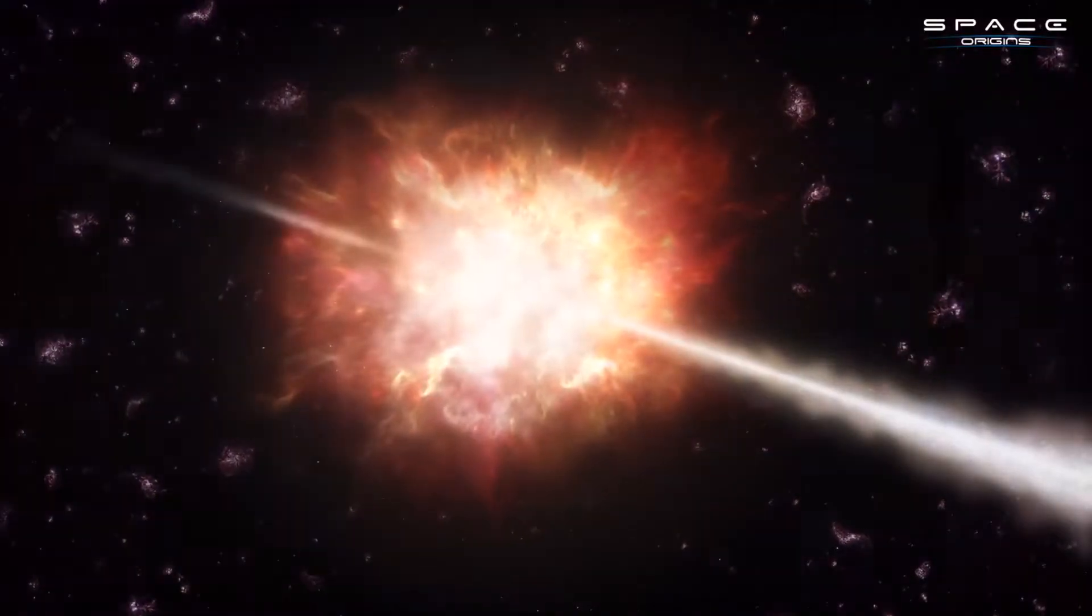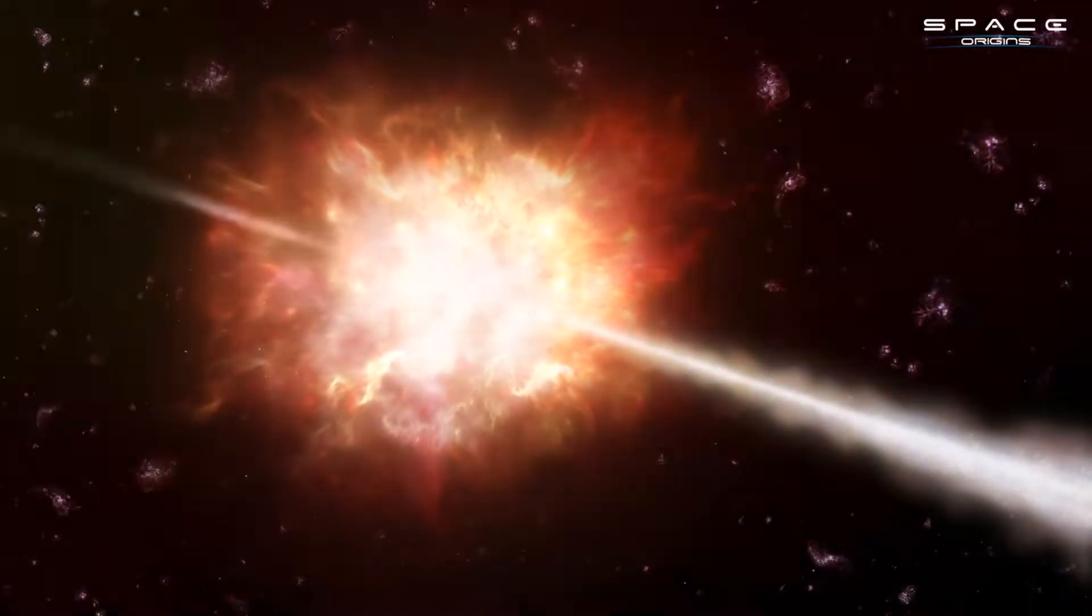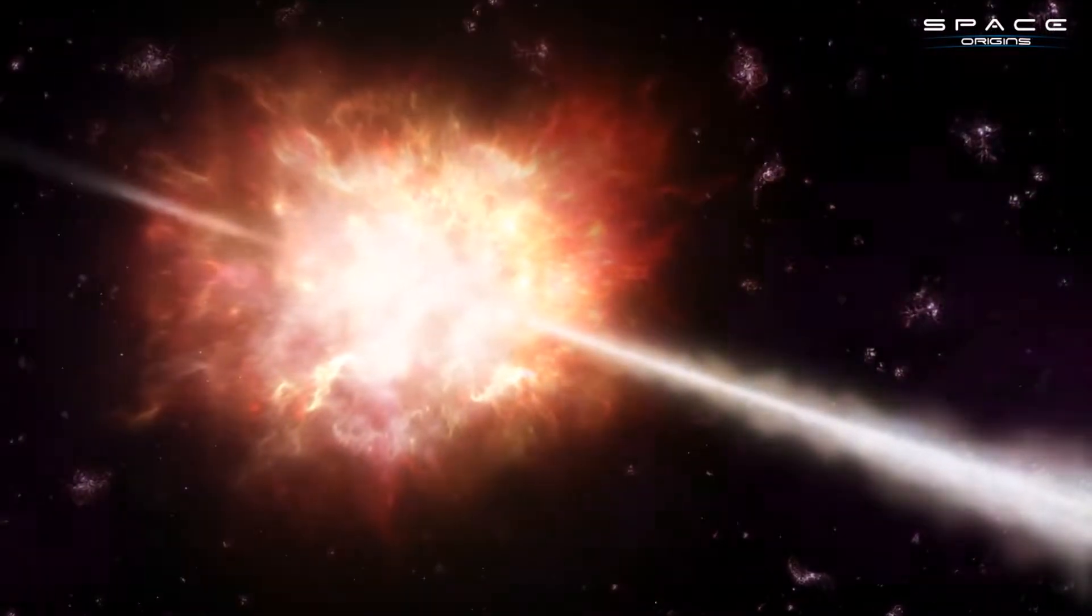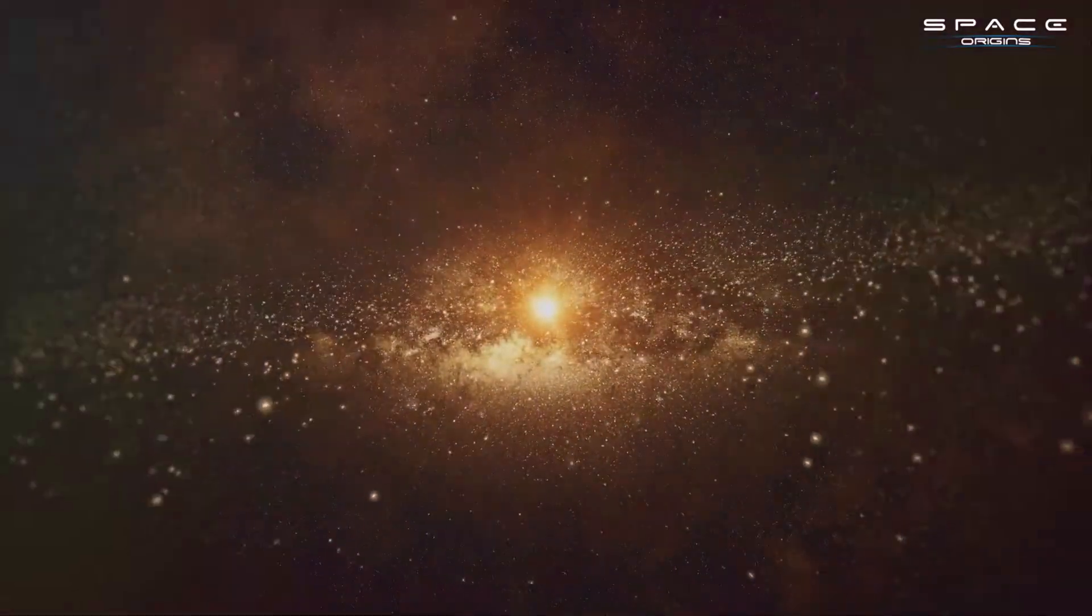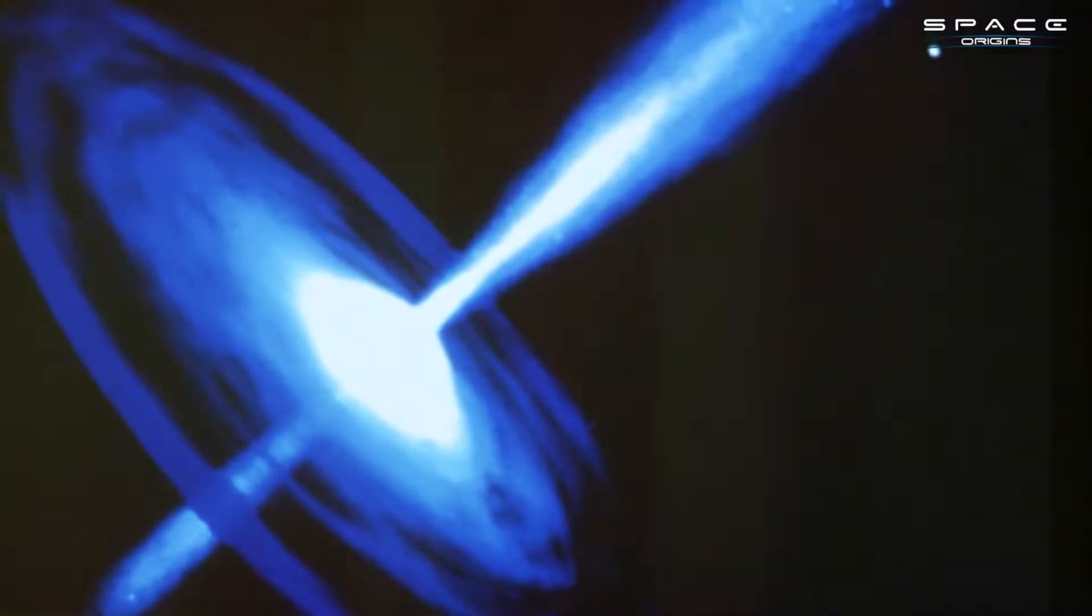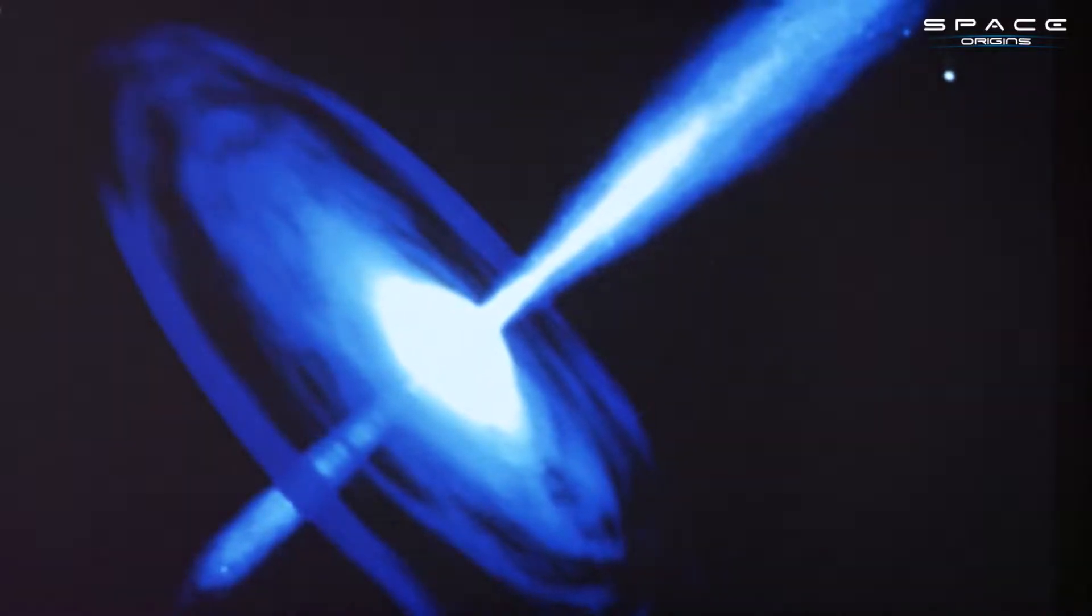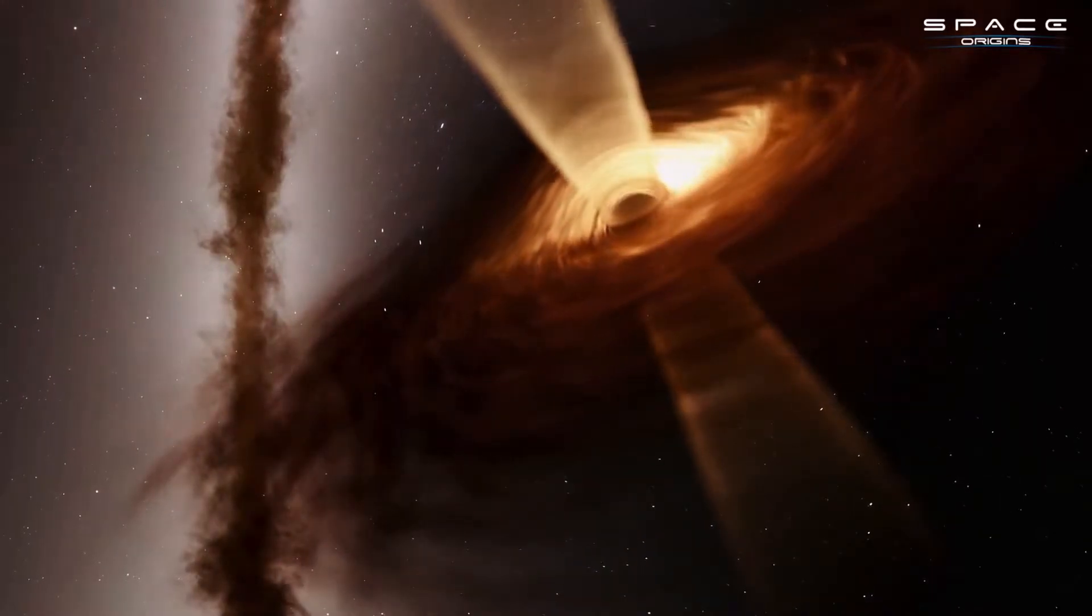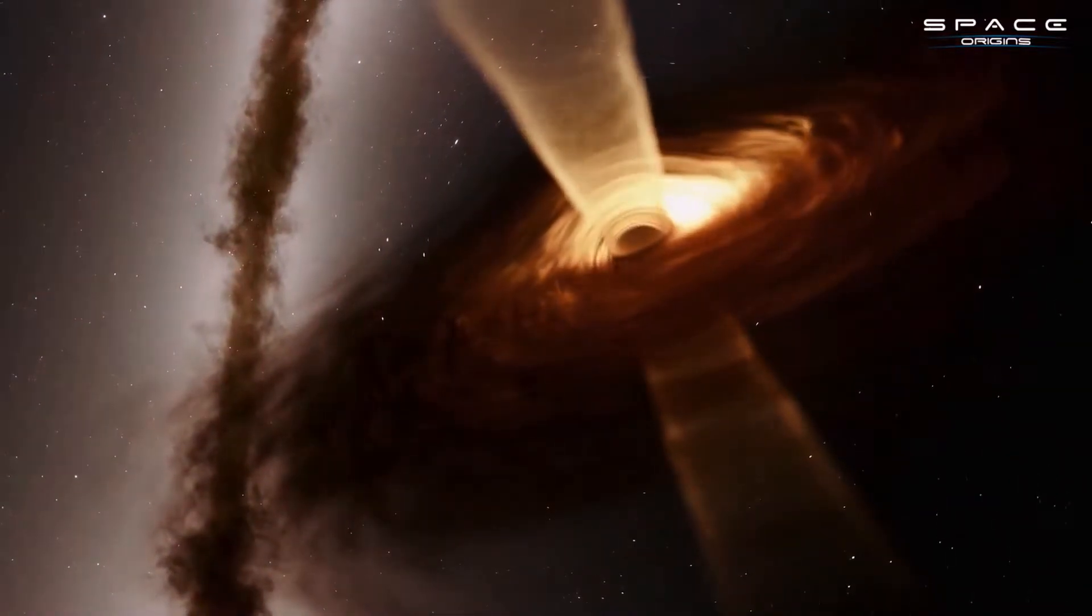So where could this particle be originating from? Some scientists are exploring the possibility of gamma-ray bursts, the most energetic events known to occur in the universe. These bursts, thought to be triggered by the collapse of stars or the merging of neutron stars, could perhaps be powerful enough to propel a particle like Amaterasu across the cosmos. But there's another equally captivating theory. Could supermassive black hole jets be the source of this particle? These jets, propelled by the immense gravitational energy of black holes, spew out particles at nearly the speed of light. It's plausible that they could be responsible for the extraordinary energy level of the sun goddess particle.